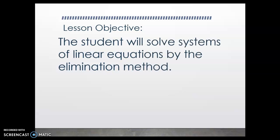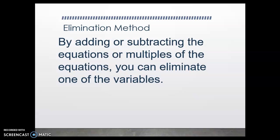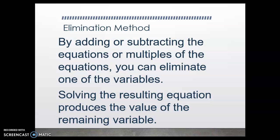Our objective for today is that you will solve systems of linear equations by using the elimination method. This is going to involve some combination. In fact, another name for this method is the linear combination method, because you are combining like terms. One other thing we need to talk about before we get started is the concept of zero pairs. So first, the definition of the elimination method: by adding or subtracting the equations, or multiples of the equations, you can eliminate one of the variables. In the past, we've called this creating zero pairs — we'll talk about this briefly in a second.